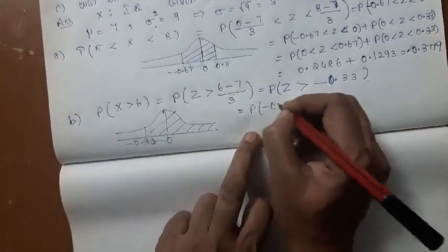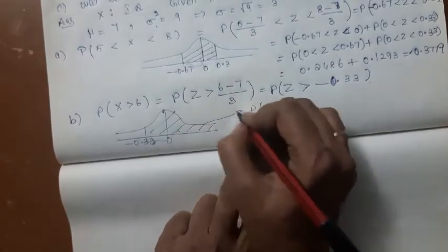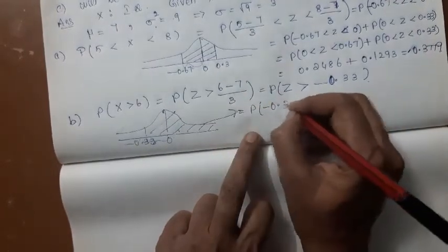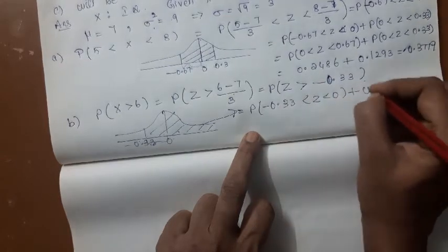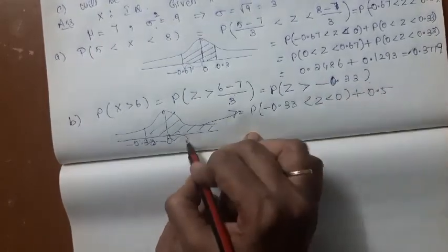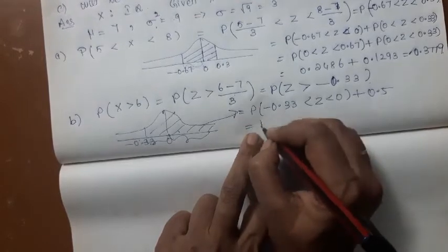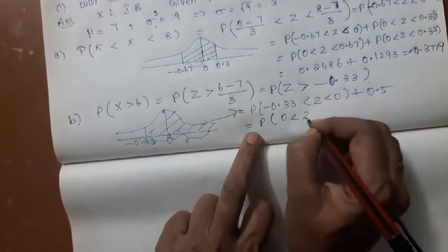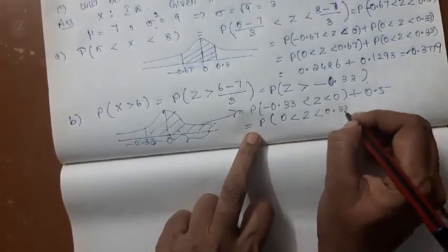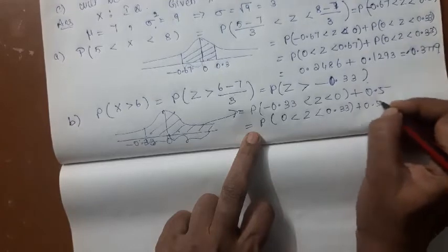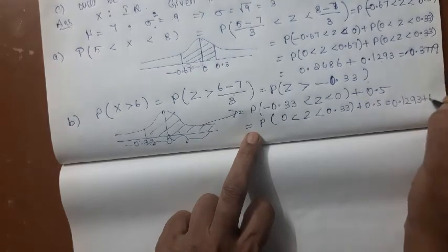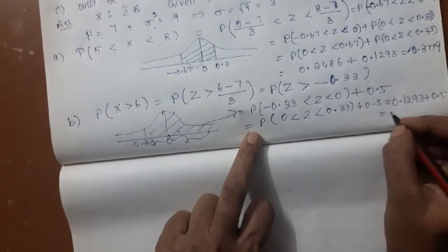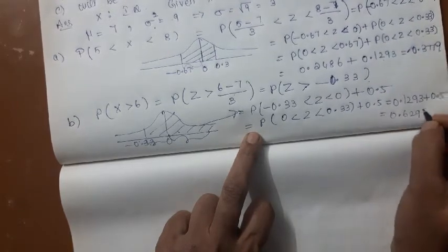So after this you should come to the curve. From the curve you are writing, minus 0.33 to 0 plus 0.5. The rest of the area is 0.5. This can be written as 0 to plus 0.33. For 0.33, already we have written the answer 0.1293, plus 0.5, the answer is 0.6293. Let us go to the next question.